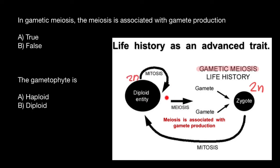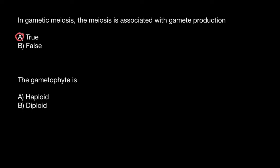And through meiosis, gametes would be produced. Again, the male gamete would be sperm and the female gamete would be the egg cell. So the first statement is true.